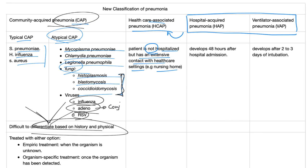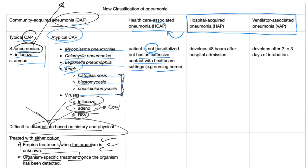How to treat community acquired pneumonia: you have two options — empiric treatment when the organism is still unknown, and organism-specific treatment. We order cultures, but they take about three days to come back. We don't leave the patient untreated; instead we give empiric treatment based on statistical probability. For example, since most community acquired pneumonia is due to Streptococcal pneumonia, we give antibiotics to cover it even before confirming the diagnosis. Once cultures confirm Strep pneumo, we narrow our antibiotics to cover just that organism.